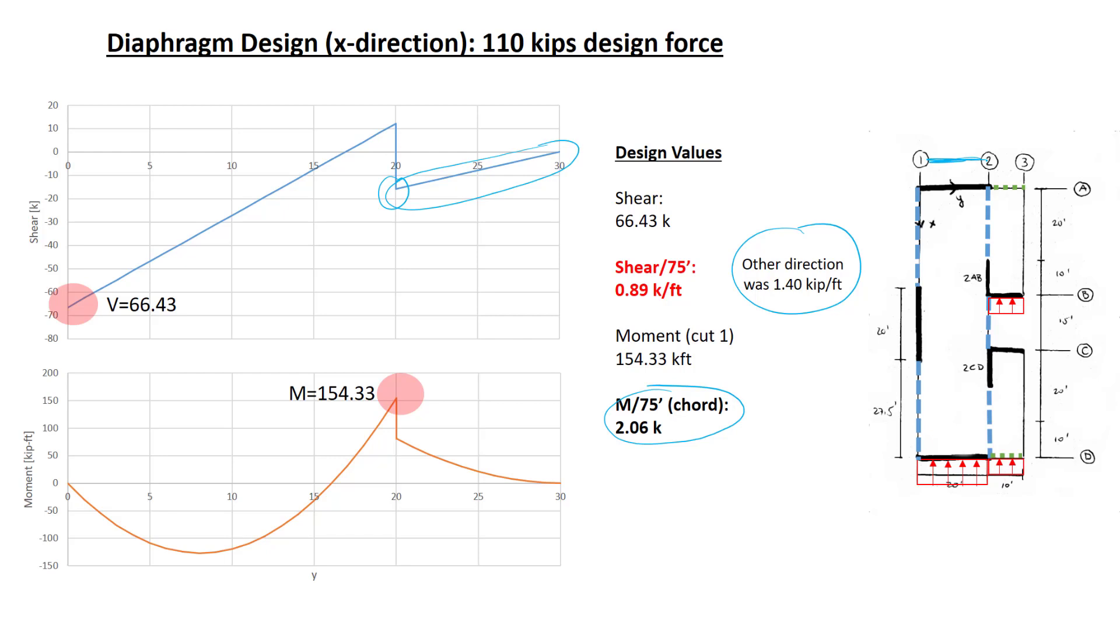Next, we'll look at the same point, but on the other side of grid line 2 on the cantilevered segment. The value of moment here is 81.39, but we divide that by a much smaller depth to get this value of chord force of 2.71 kips. That's the controlling value of chord force, and most likely we would simply use that value over that whole length.